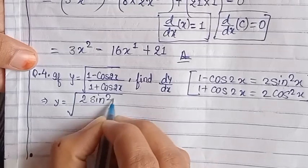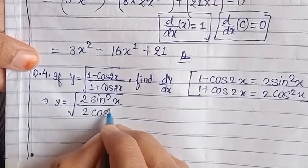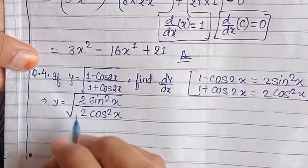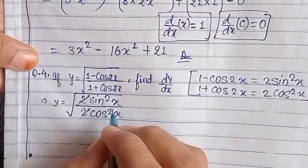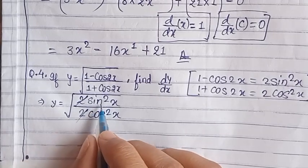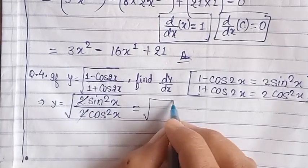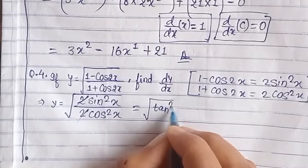So here it will be 2 sine squared x upon 2 cos squared x. Right. Now here 2 and 2 cancel out. What do you get? Sine squared x upon cos squared x. So here under root what do you get? Tan squared x.